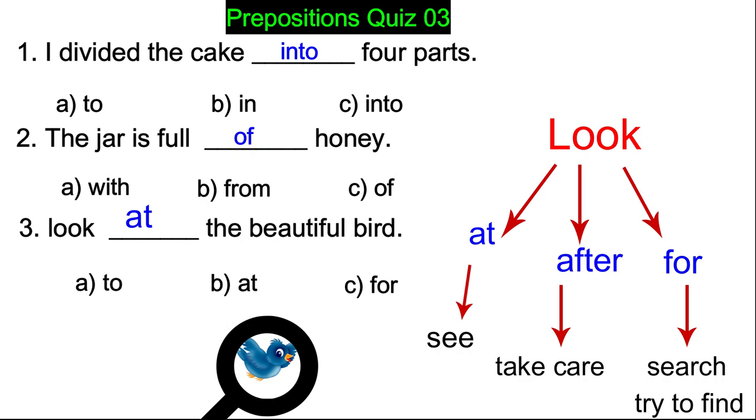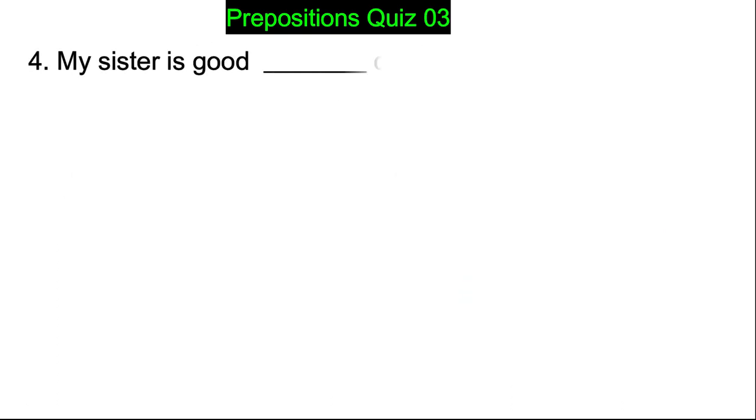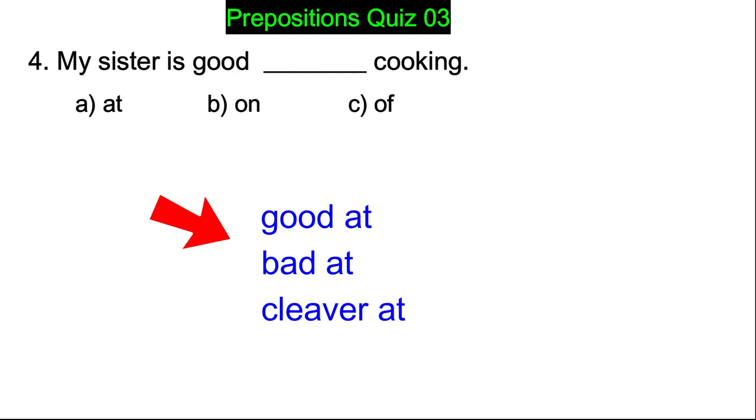My sister is good blank cooking - at, on, or of? Look guys, we always say good at, bad at, clever at, slow at. So it is the correct answer here. My sister is good at cooking.